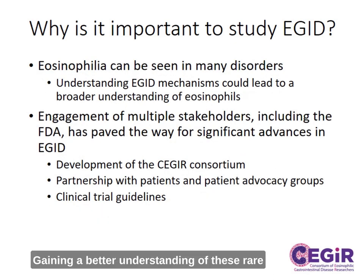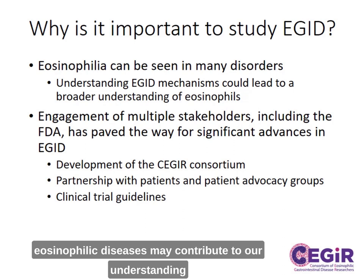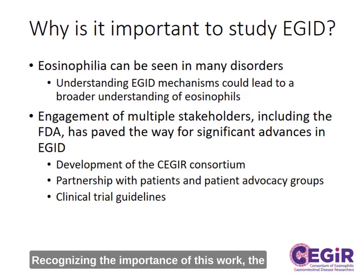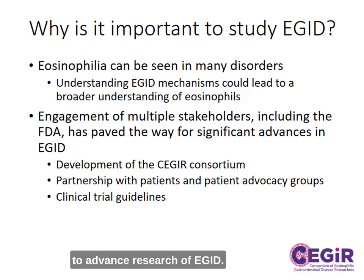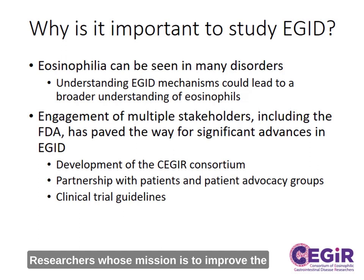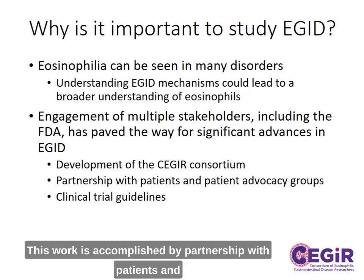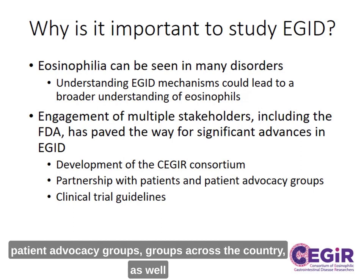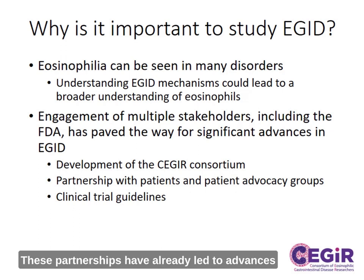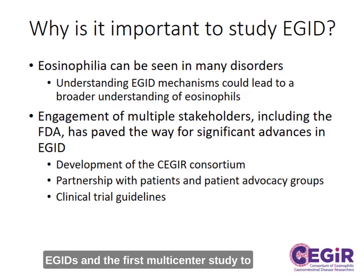Gaining a better understanding of these rare eosinophilic diseases may contribute to our understanding of high eosinophil levels in more common diseases such as asthma. Recognizing the importance of this work, the National Institutes of Health have partnered with investigators across the United States and Europe to advance research of EGIDs. These efforts led to the creation of the Consortium of Eosinophilic Gastrointestinal Disease Researchers, whose mission is to improve the lives of individuals affected by EGID. This work is accomplished by partnership with patients and patient advocacy groups across the country, as well as with the FDA to focus on how best to meet the needs of these individuals. These partnerships have already led to advances including guidelines for performing clinical trials in EGIDs and the first multi-center study to investigate the natural history of EGID.